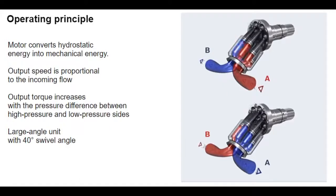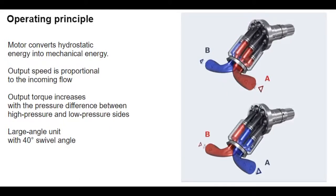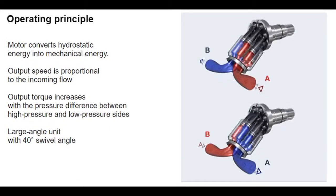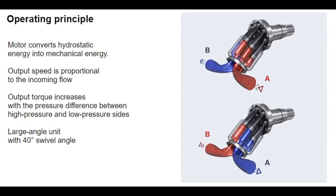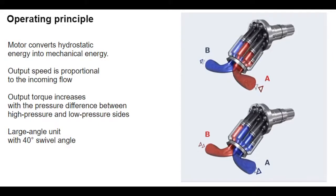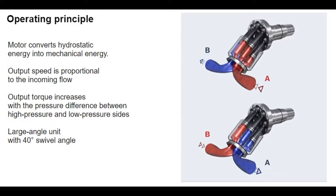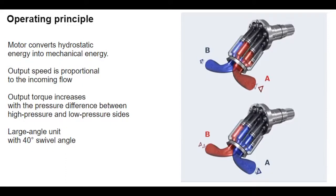The direction of output rotation depends on the supply of hydraulic fluid. If it is supplied from the A side (left), the motor rotates clockwise. If it is supplied from the B side (right), the motor rotates counterclockwise.